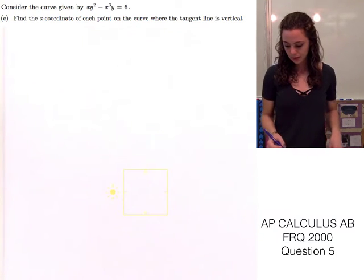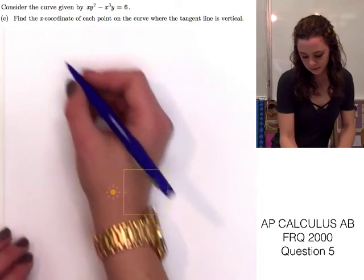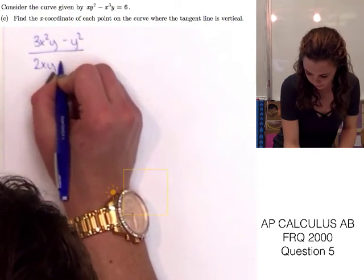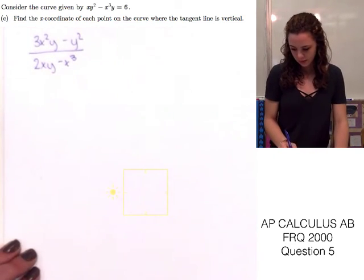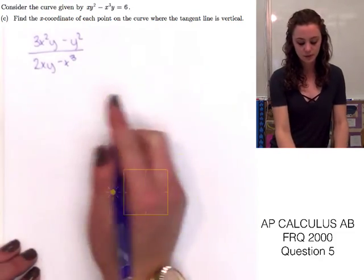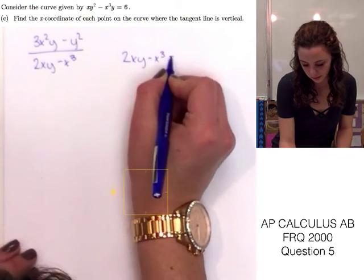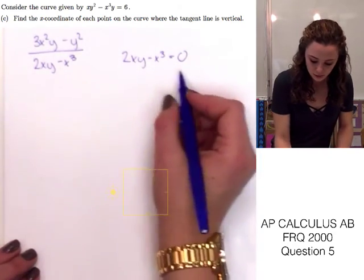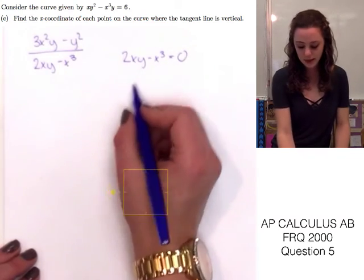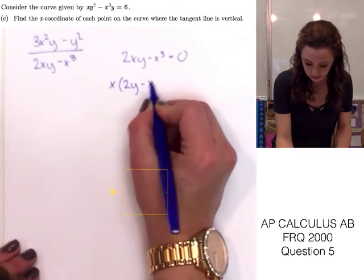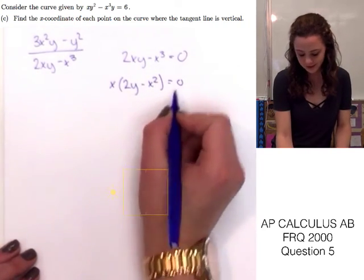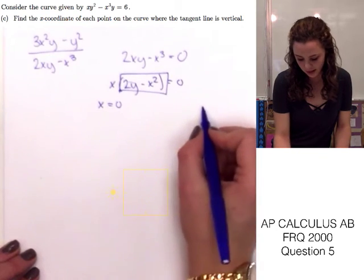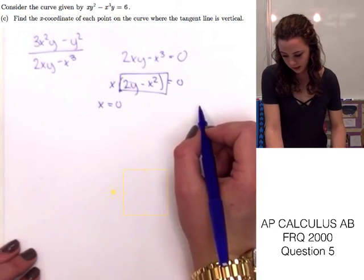To find where the tangent line is vertical, we set the denominator of the derivative equal to 0: 2xy minus x³ equals 0. We need to solve for x. Since there's an x in both terms, we can factor out x, giving us x times (2y minus x²) equals 0. So x equals 0 is one solution, and then we set 2y minus x² equal to 0 to solve for y.